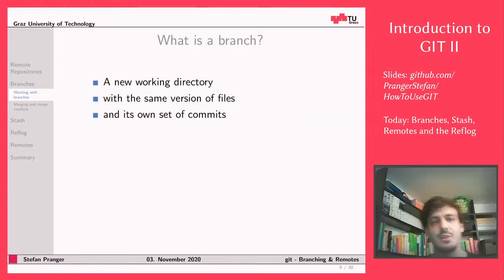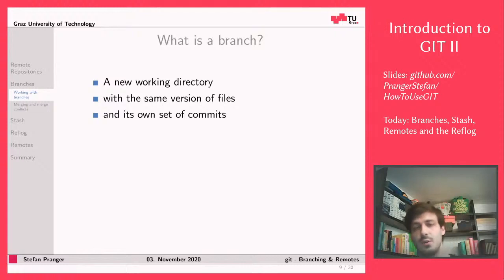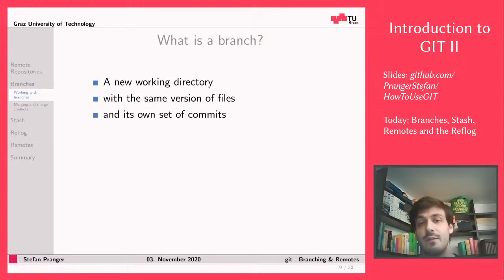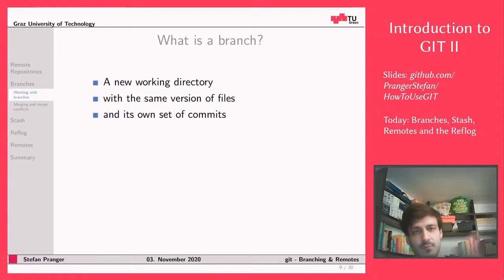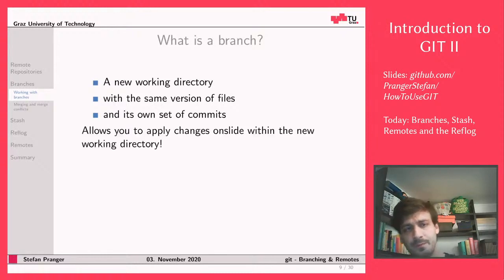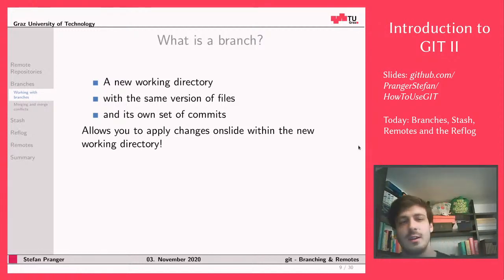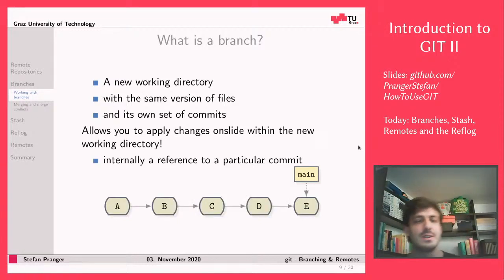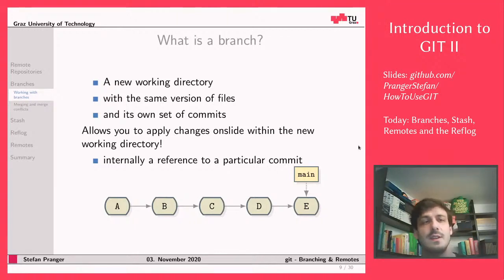A branch is basically a new working directory and sandbox, but it's going to have the same version of files. When you branch away from a certain commit, you're basically telling Git to create a new reference for you. With that new reference, you'll be able to create a different branch of commits. What branches allow you to do is apply these changes only to your new working directory. Internally, a branch is just a reference to a particular commit. As soon as we play with the git branch command and the git switch command, we're going to see what that actually means - having different references to different branches.